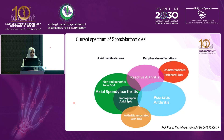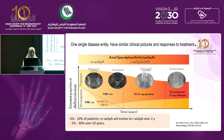Other diseases include psoriatic arthritis, reactive arthritis, arthritis associated with inflammatory bowel disease, and undifferentiated peripheral spondyloarthritis, mainly presenting with peripheral joint involvement. There is overlap between these two groups, and that's why we look at them as one interrelated disease.